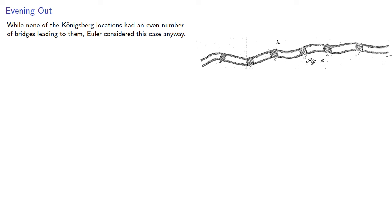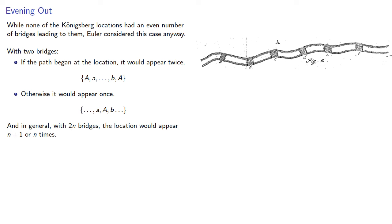While none of the Königsberg locations had an even number of bridges leading to them, Euler considered this case anyway. With two bridges, if the path began at the location, it would appear twice. Otherwise, it would appear once. And in general, with 2n bridges, the location would appear n+1 or n times, depending on whether we started there or started someplace else.